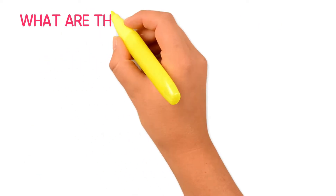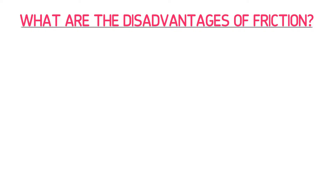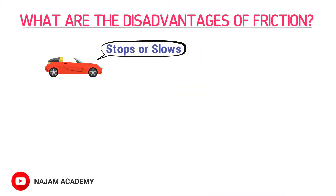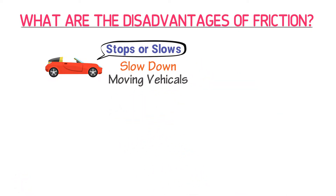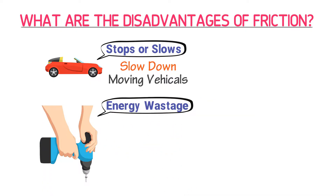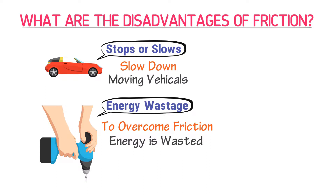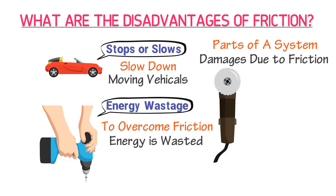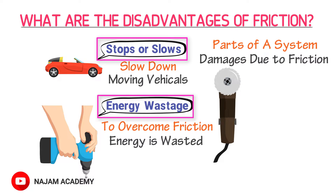The last question is: what are the disadvantages of friction? Sometimes friction can be a hindrance. For example, it stops or slows down moving objects — for instance, it slows down moving vehicles or completely stops them. Secondly, energy wastage due to friction: in machineries, a large amount of energy is wasted to overcome friction, due to which the cost of production increases. Thirdly, friction produces wear and tear, meaning many parts of a machine damage over time due to friction.